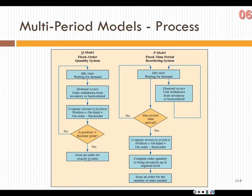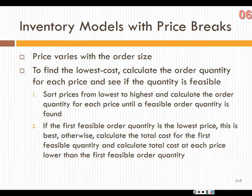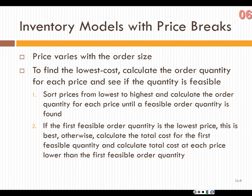The next piece of today's lecture is inventory models with price breaks. What happens if my economic order quantity says I want to order 500 or 552, but I get a price break if I order 600? How do I make that decision about what I'm going to order?